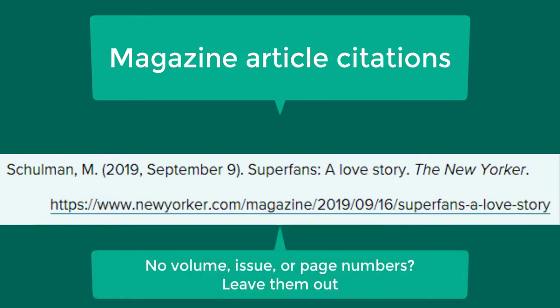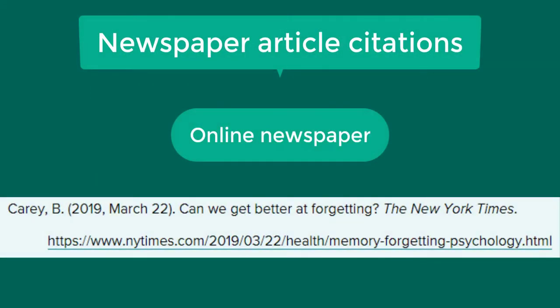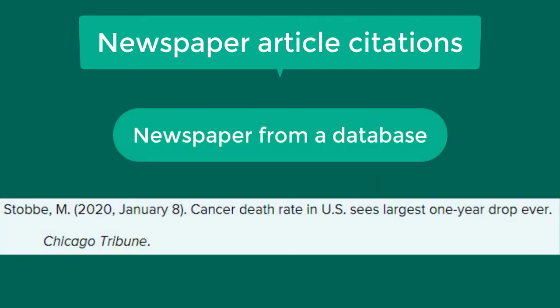If the magazine article does not have volume, issue, or page numbers, leave out the missing elements from the reference. Newspaper articles also follow a similar format. If the newspaper article is from an online newspaper that has a URL, include the URL at the end of the reference. Again, if the volume, issue, or page numbers for the article are missing, omit these elements. If the newspaper article is from a library database, provide the title of the newspaper and any volume, issue, and page numbers that are available. Don't include database information in the reference. If the article does not have volume, issue, or page numbers, the reference may end with the title of the newspaper.